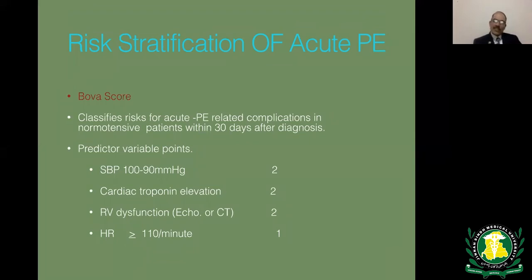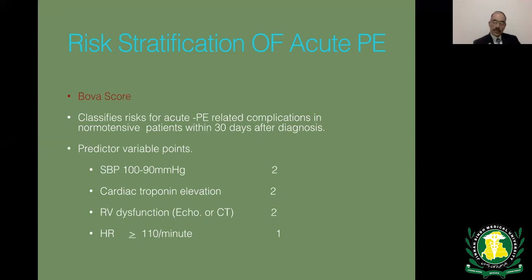The BOVA scoring system divides risk into three stages using four parameters, each worth 2 points: systolic BP 90–100, elevated cardiac troponin, RV dysfunction, and heart rate ≥110. A score of 2 is stage 1 (low risk, ~3% early PE complication rate); 2–4 is stage 2 (~6%); above 4 is stage 3 (high risk, ~10% early PE-related complication rate).